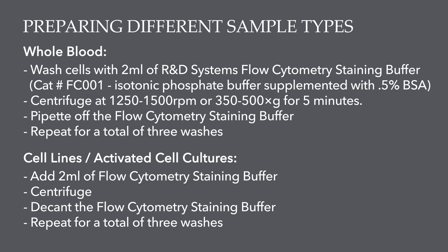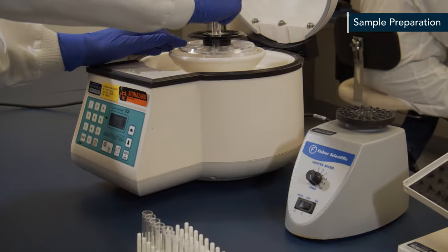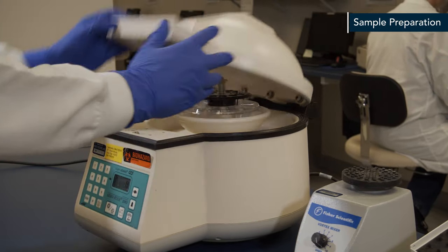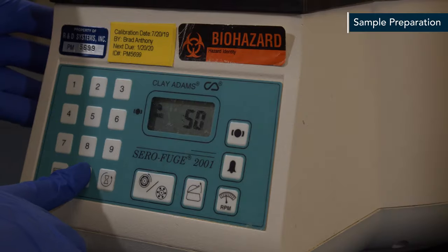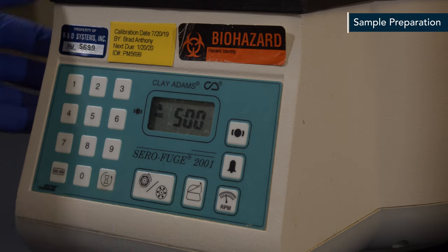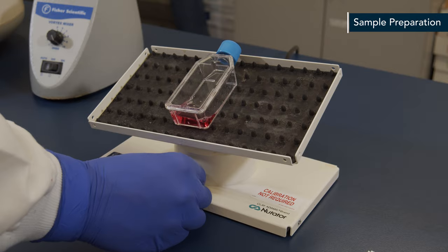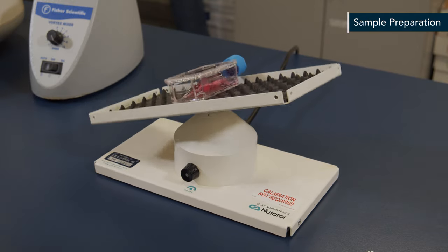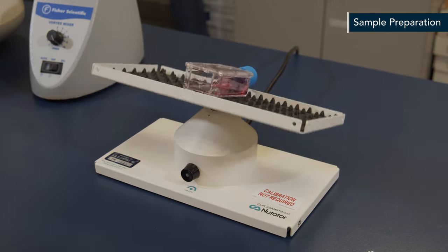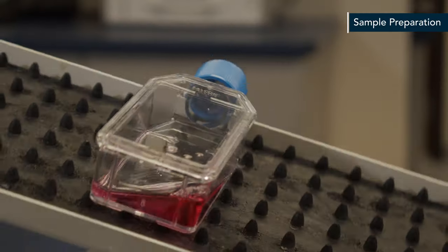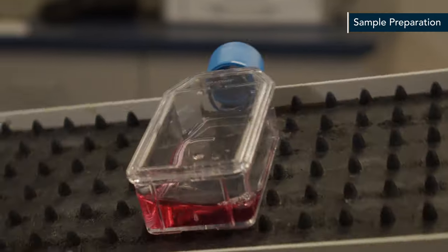All centrifuging steps in this protocol should be completed at 1,250 to 1,500 RPM or 300 to 500 Gs for five minutes. You may need to pre-treat adherent cell lines with 0.5 millimolar EDTA to remove them from their substrates. Cells that require trypsinization to enable removal from their substrates should be further incubated in medium for six to ten hours on a rocker platform to prevent reattachment to the substrate.